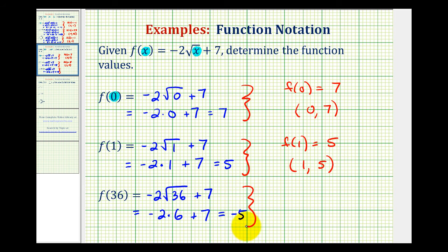So here, we have a function value of negative 5, or f of 36 is equal to negative 5. So when the x-coordinate is 36, the y-coordinate would be negative 5, and this would be another point on the graph of the function.